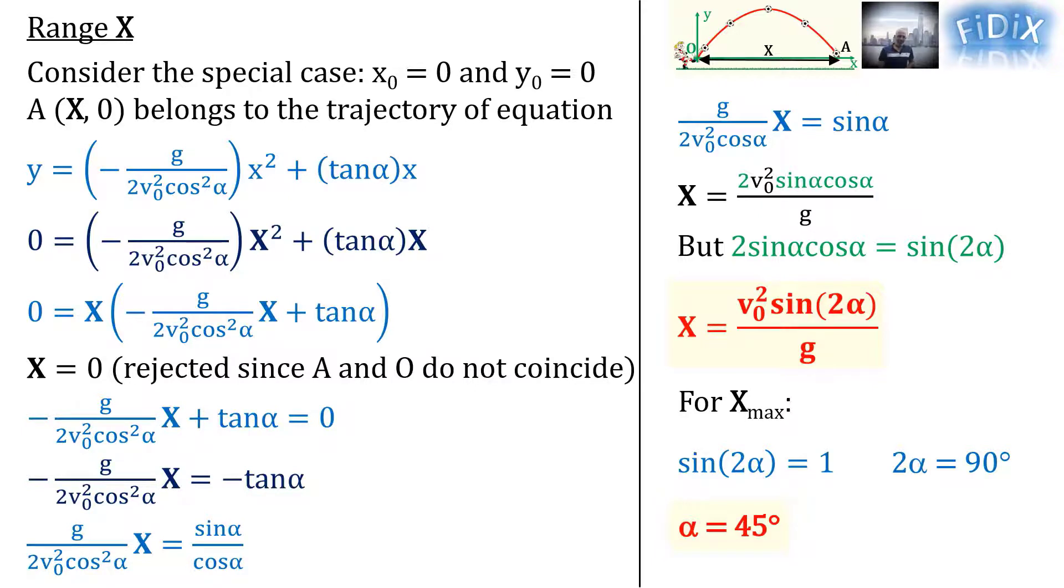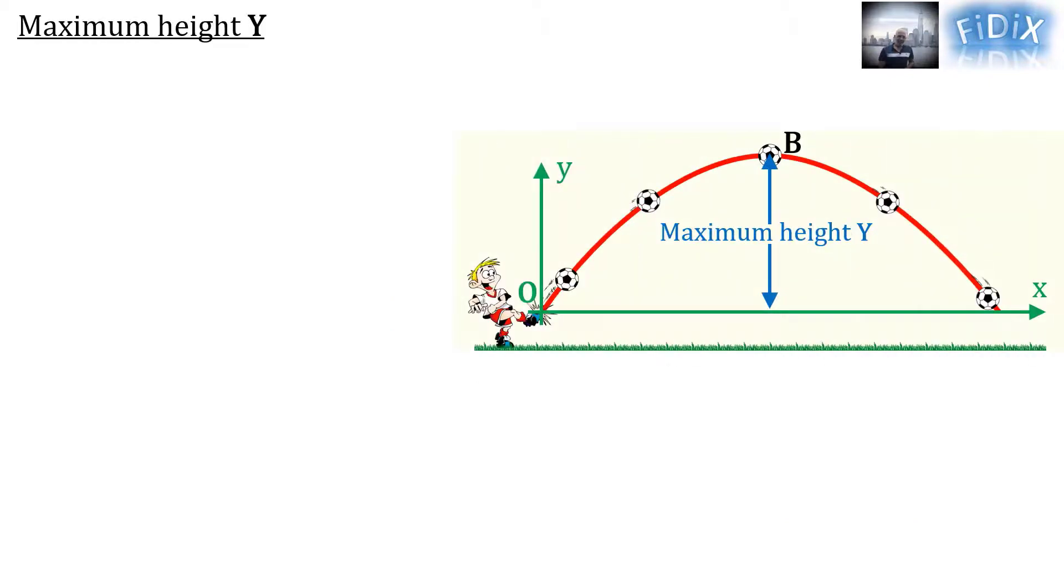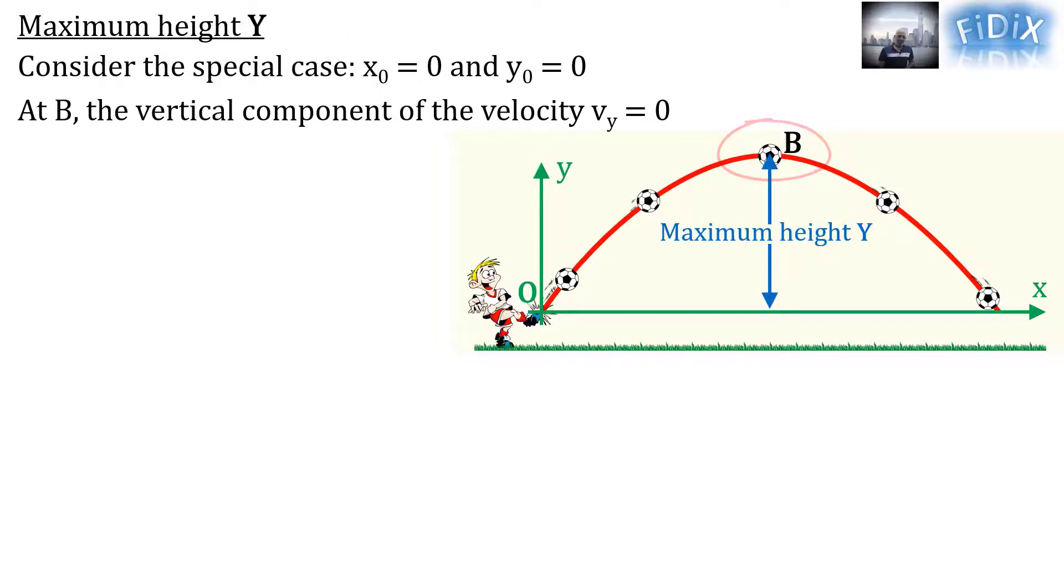In this case we can obtain the formula of the maximum range. To find the maximum height of the projectile, we will choose one of different methods which can be applied, and we will choose the same special case where the launch point coincides with the origin O of the frame of reference. At the highest point B of the trajectory, the vertical component of the velocity Vᵧ is equal to zero.